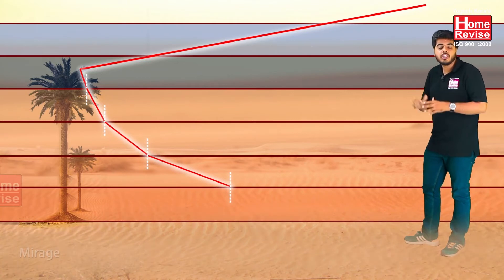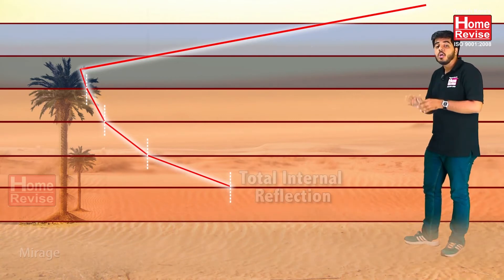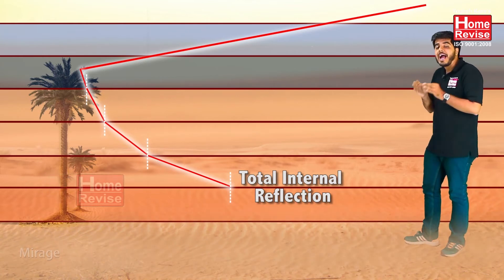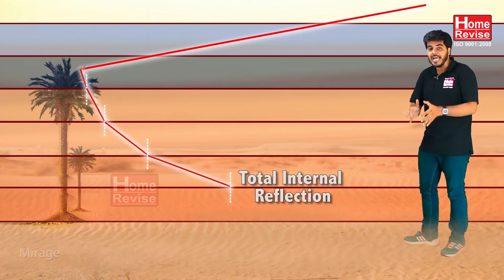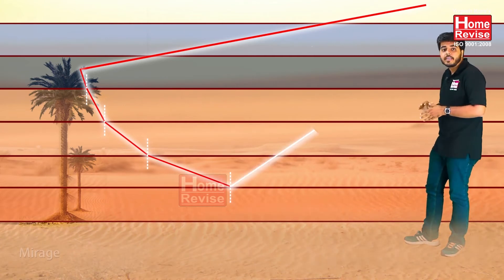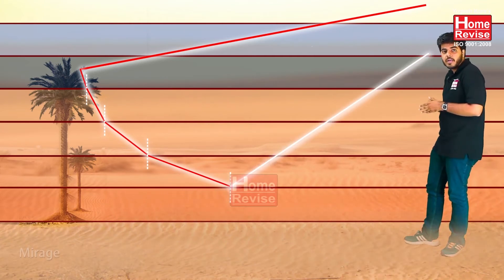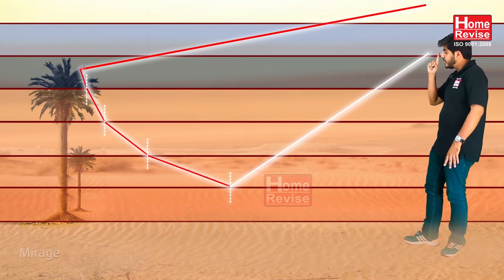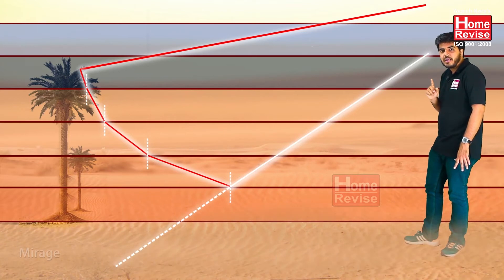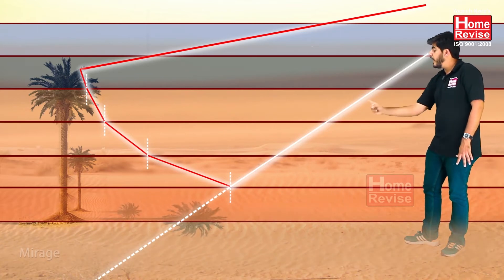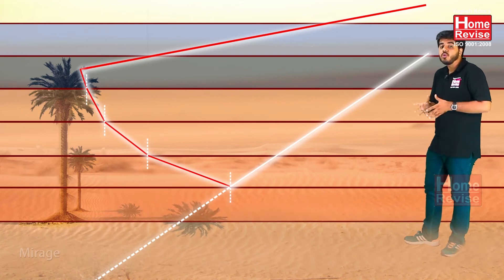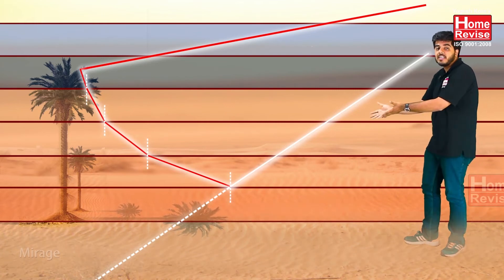It reaches the position at which it suffers total internal reflection — meaning the angle of incidence is greater than the critical angle of incidence and the light gets reflected. This reflected light comes into our eye, and our eye traces a straight-line path. After tracing a straight-line path, we see an image there, and what we actually feel is that the object is placed there.